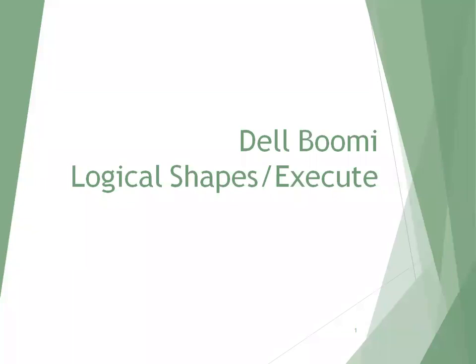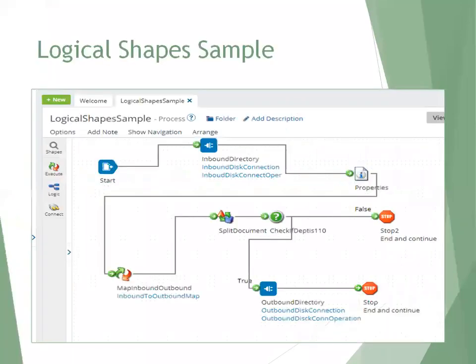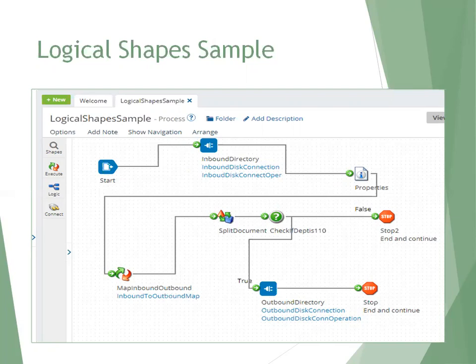This is a continuation of our DelBomi trainings and we are using our disk-to-disk sample, where we have utilized the inbound directory as well as outbound directory. It's a copy-paste of that sample, but we added a few properties: mapping, split condition, decision, and properties shapes. We'll try to understand how exactly we are using them and what way they help deal with the samples.